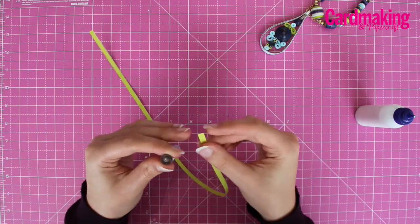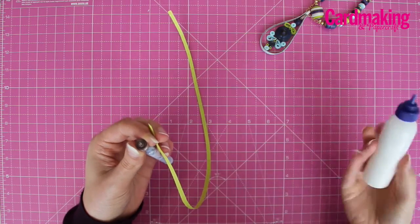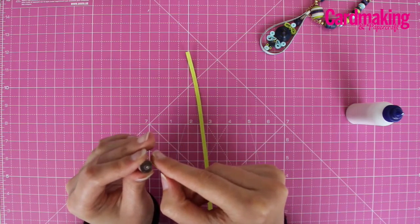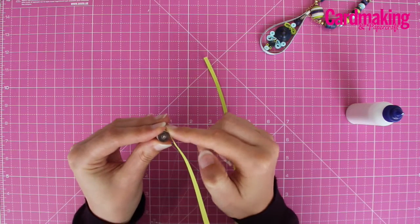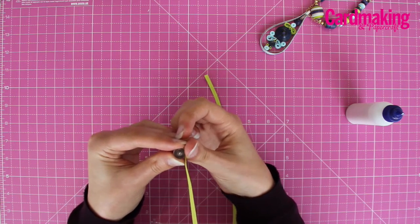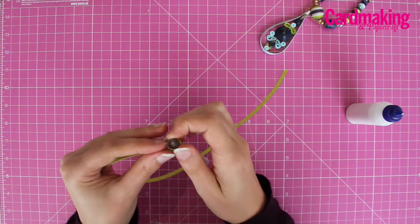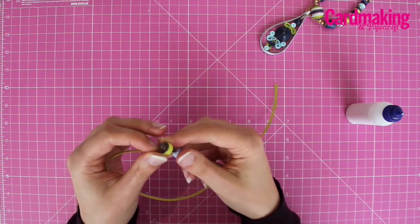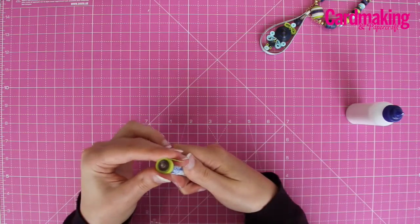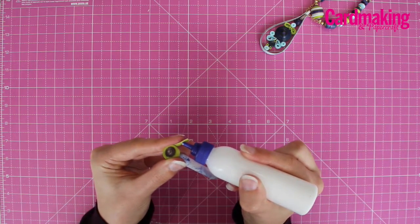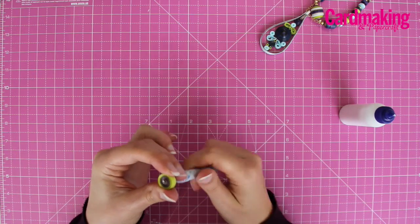Then use a lime green strip and connect it to the end with some more glue. Hold that in place for a moment until it's secure. And then wind that onto the bead. When you get to the end of that coil, again use a small amount of glue to secure the end and hold it in place.